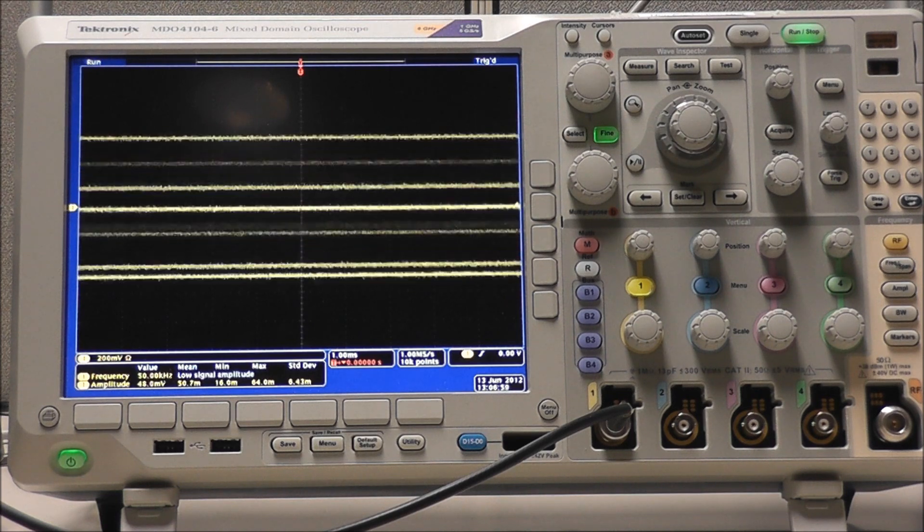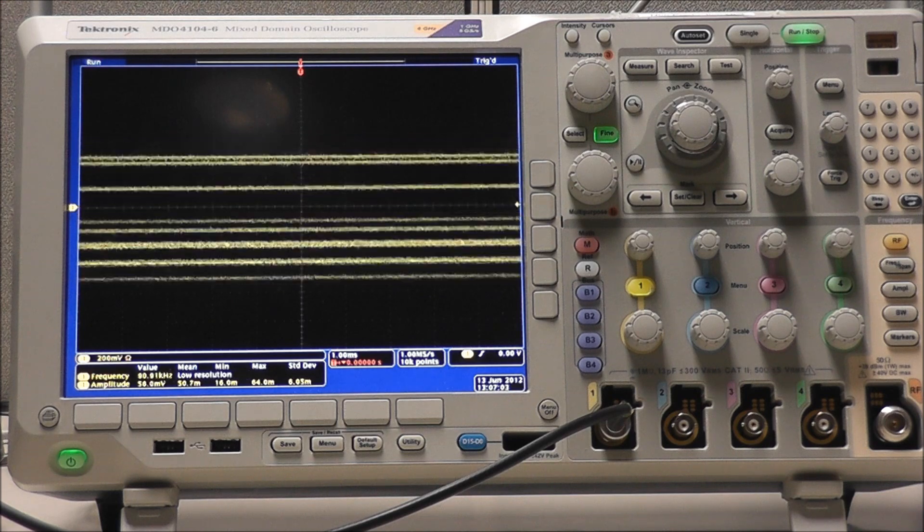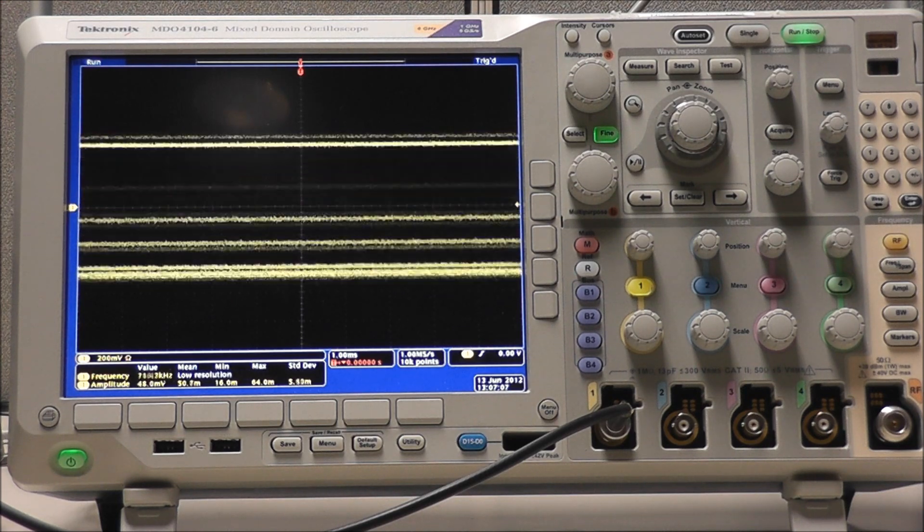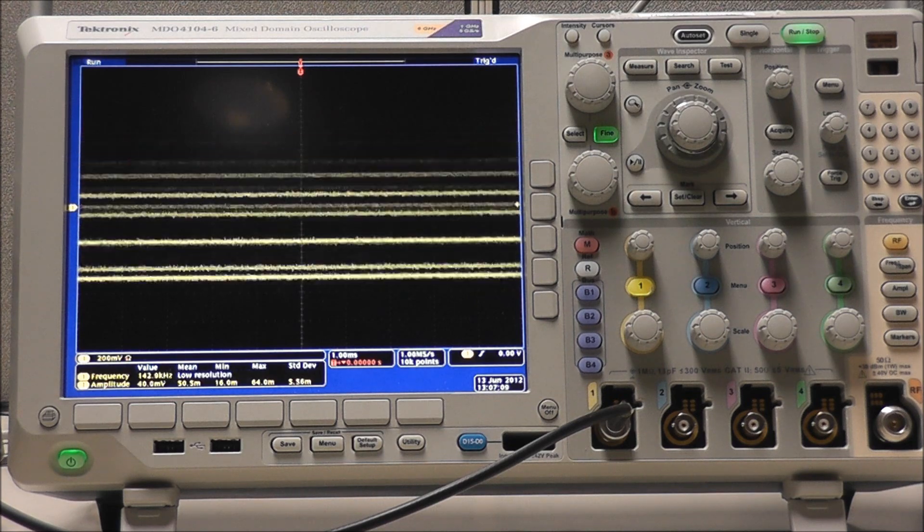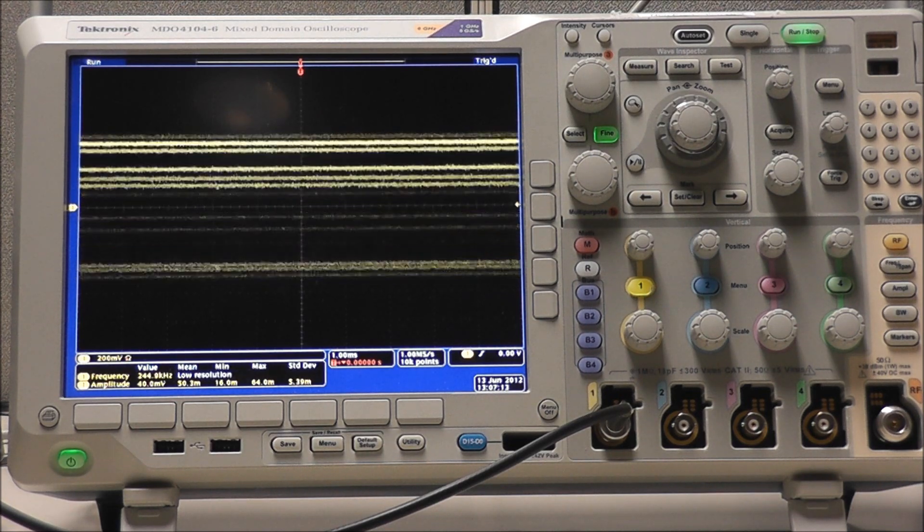To avoid aliasing, the Nyquist sampling theorem states that the sampling rate must exceed 2x samples per second, where x is the highest frequency of the original signal. For this reason, oscilloscope maximum sample rates are typically at least 10 times the bandwidth to help reduce the possibility of aliasing.